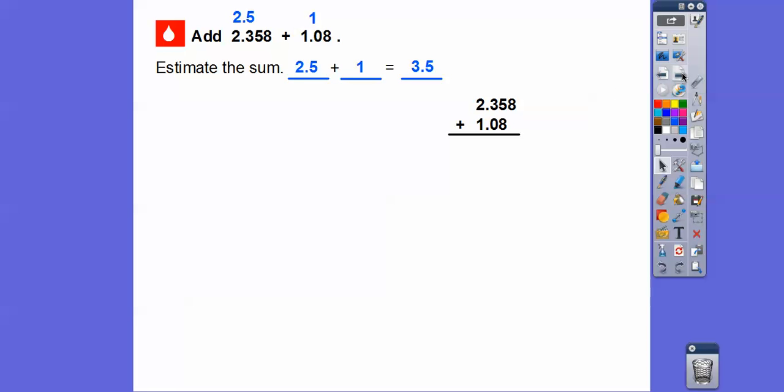So as long as we get an answer that's close to 3.5, then we can say our answer is a reasonable answer. Now, what I like to do is put a 0 there for place value, and then we're just going to add straight down. So here we go. Add the thousandths first. So 8 plus 0 is 8. Now we're going to add the hundredths, and then add the tenths, and then add the ones.